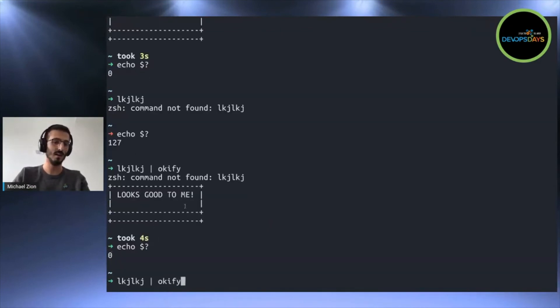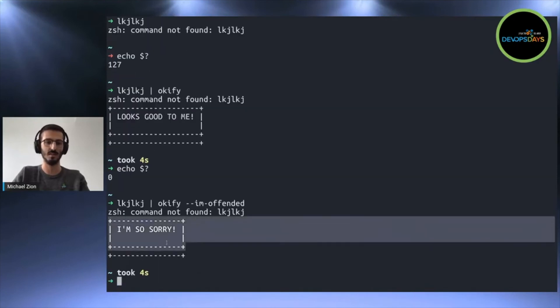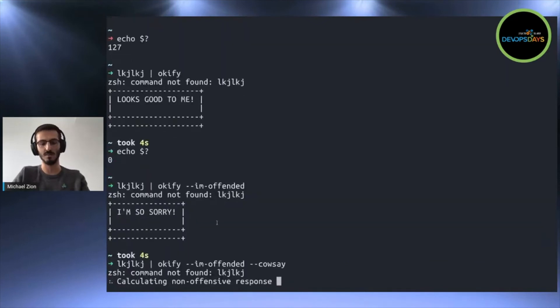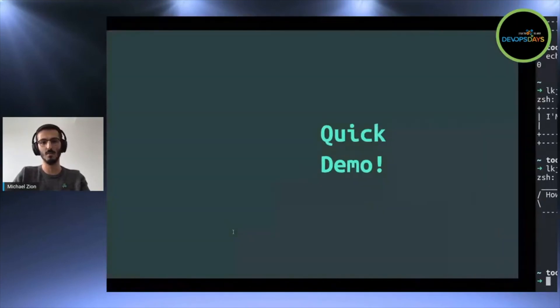And another cool thing you can do is you can pass the I'm offended flag. When you pass the I'm offended flag, basically, you get an apology instead. And there are a lot of interesting integrations. For example, cow saying. So you can get the cow saying whatever it is you want it to say. And this is a tool to make this philosophy come to life.